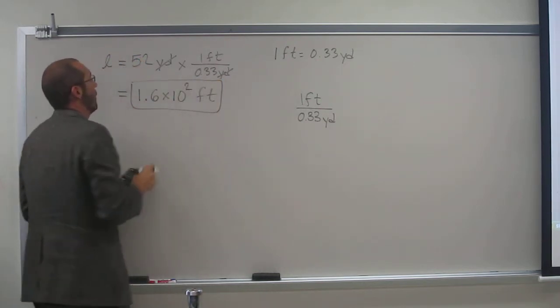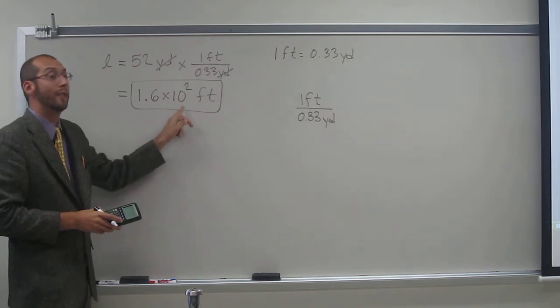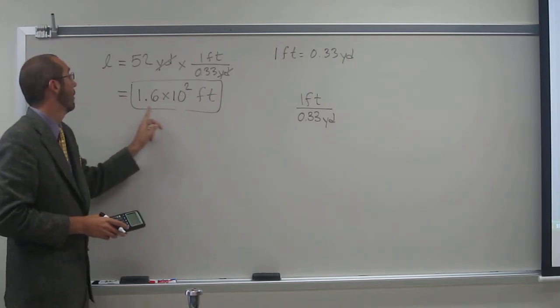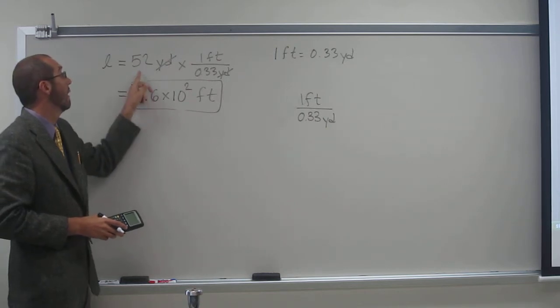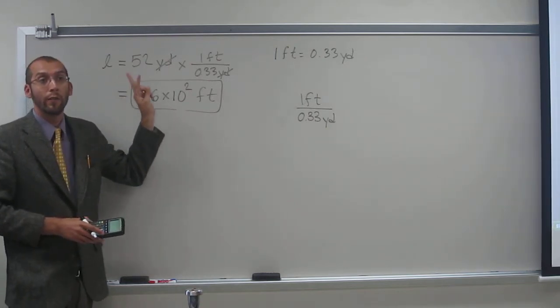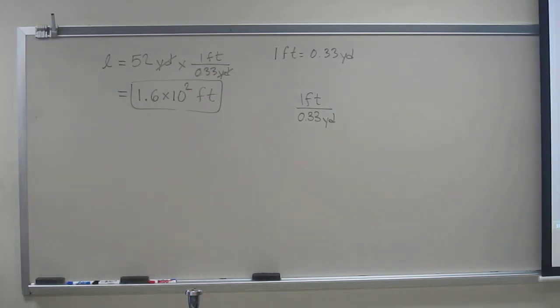So notice what I did here, 1.6 times 10 to the 2, this is called scientific notation. The reason I put only two digits here is because my starting number only had two significant digits. So I couldn't put the answer 157 on here, or 158, because I could only go to the right amount of digits on my starting material. Any questions on that? Okay, very good.